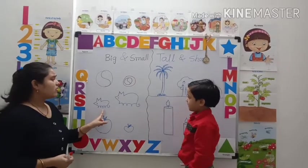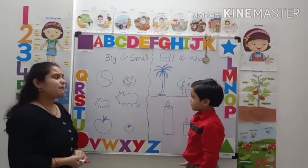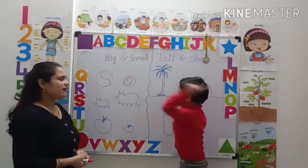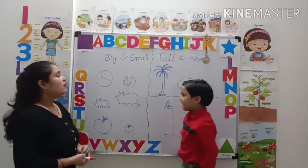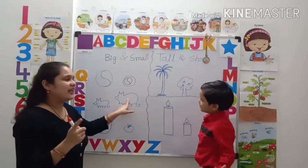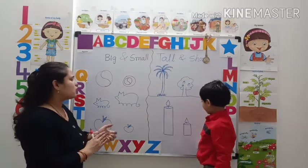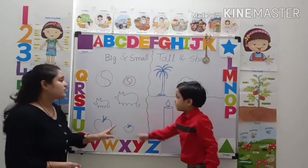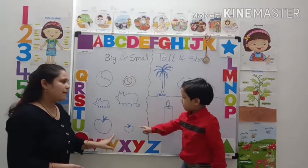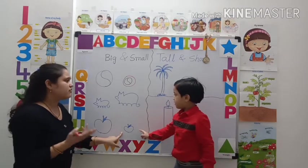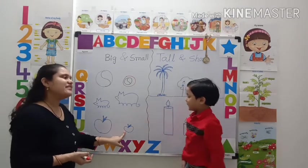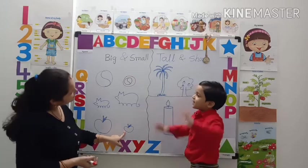Now, which one is big? Which one is big? Yes, this rat is big. Very good. Good job. Now, which one is small? Which one is small in this group? Apple. Which one is small? Yes, this apple is small.